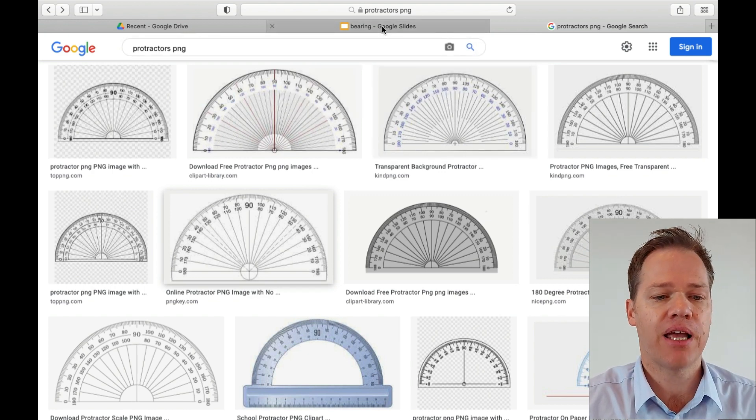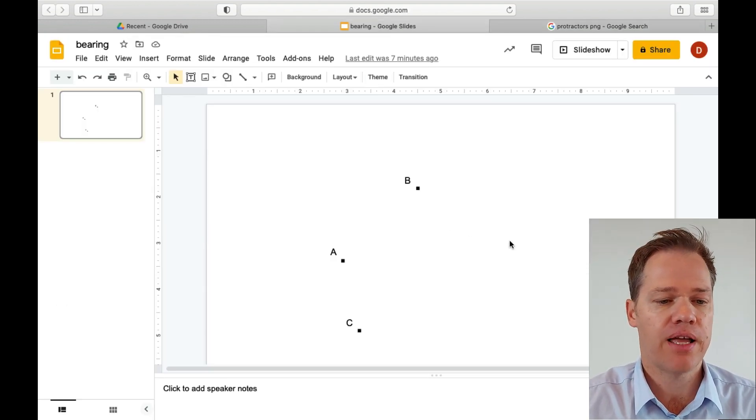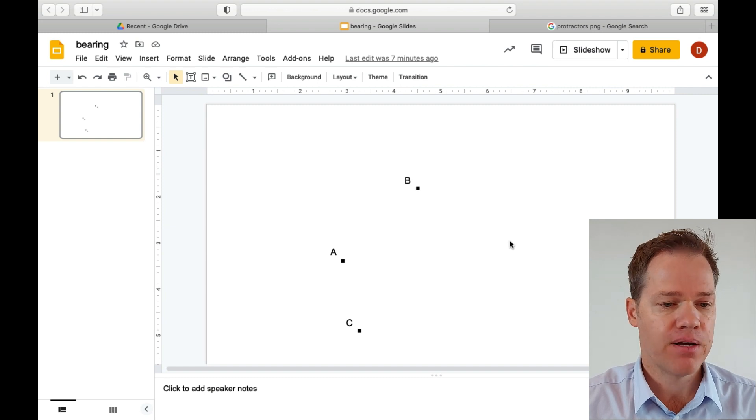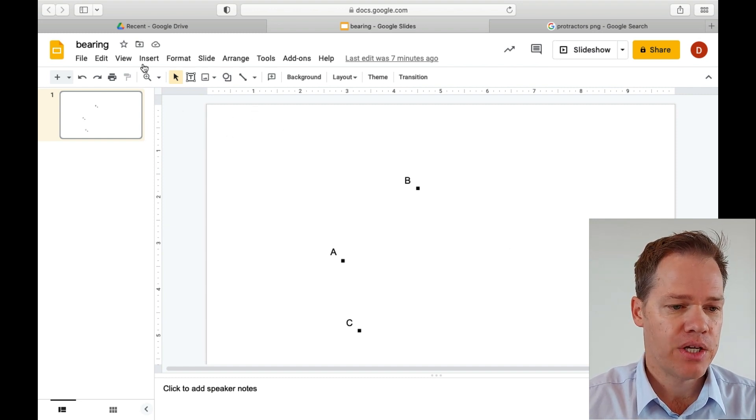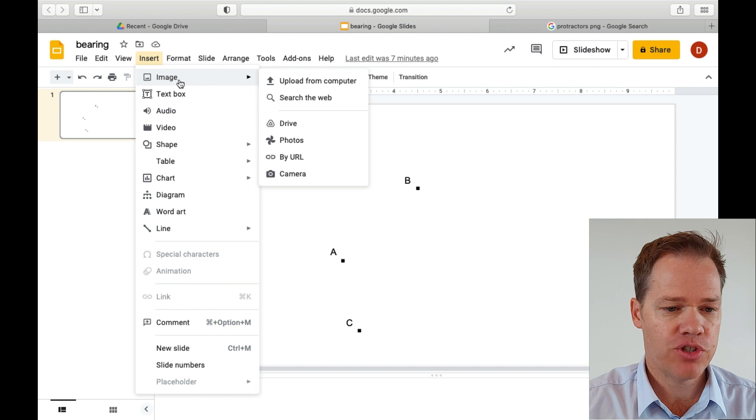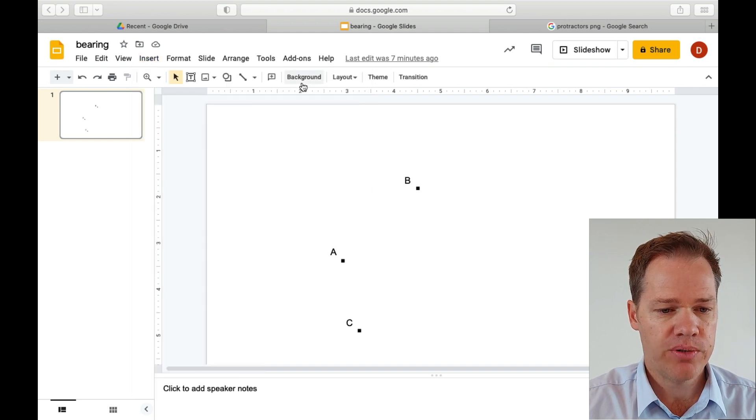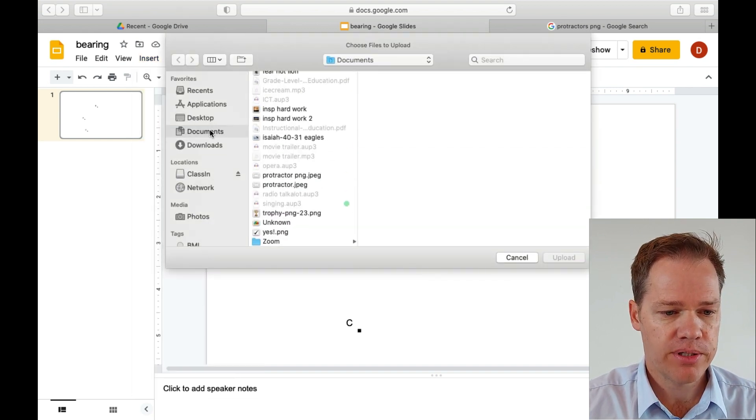And then you just need an application like Google Slides or PowerPoint. So what you do next, you say insert image, upload from computer. I saved it in my documents folder, and I called it protractor.